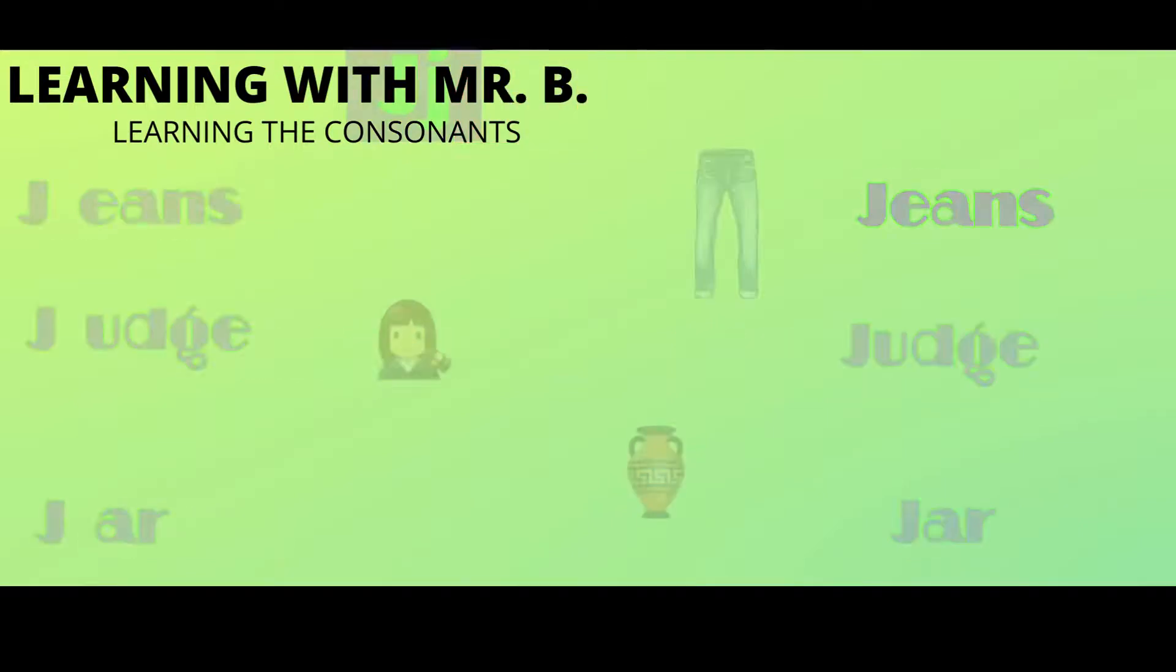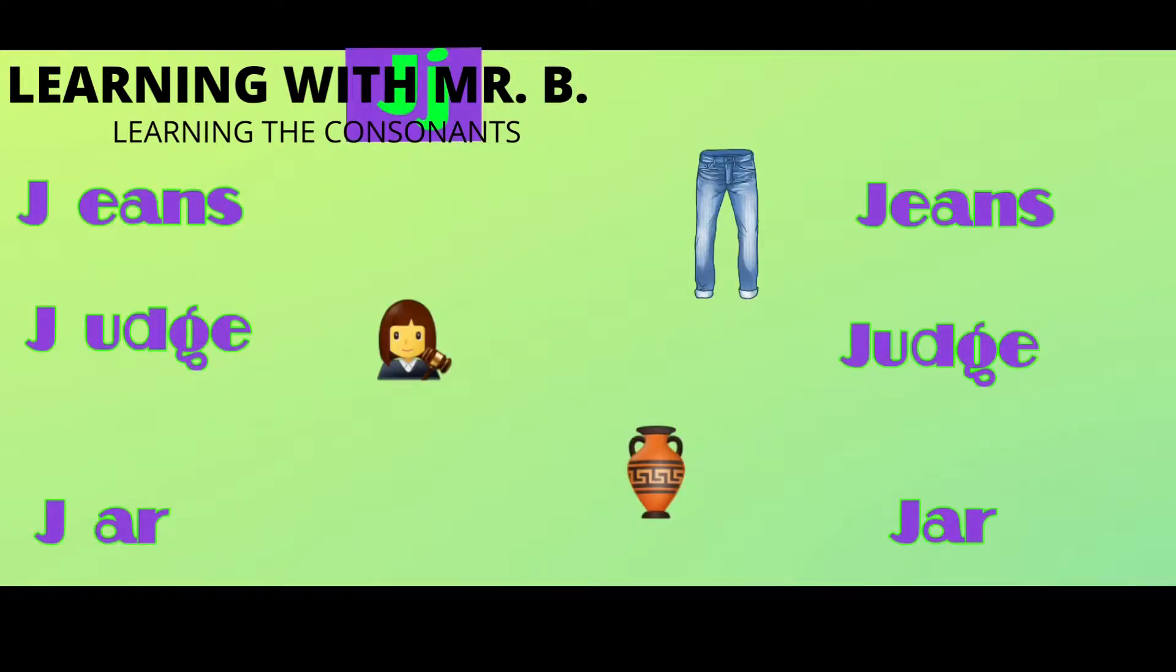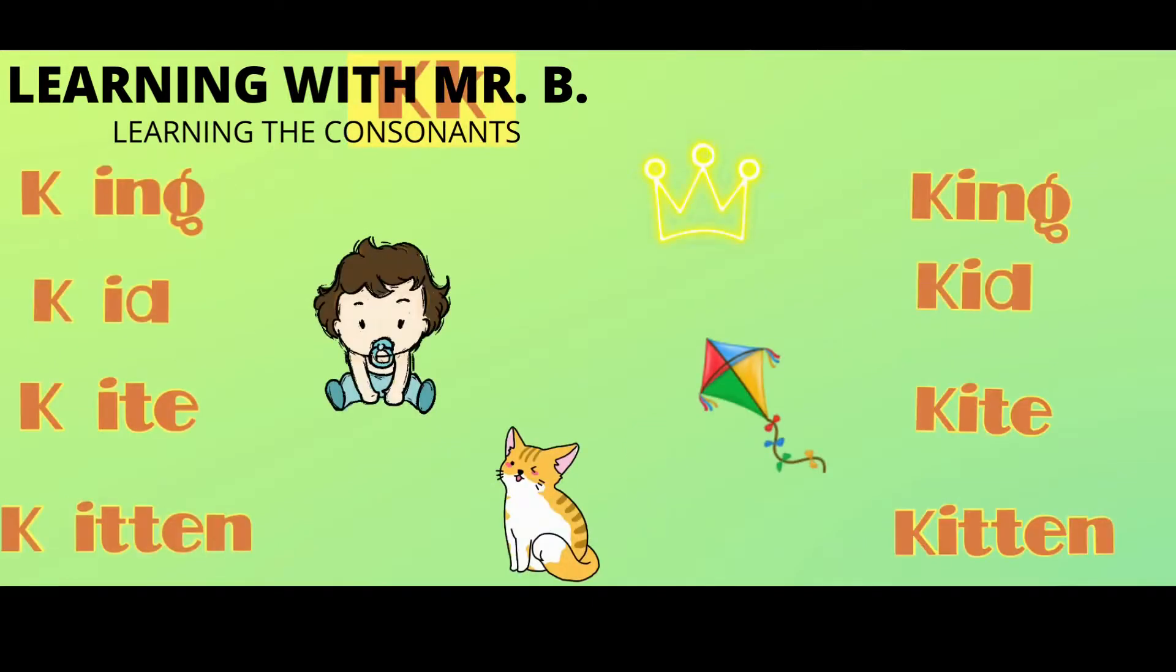Consonant J: jar, judge. And K: Kate, king, thick, keeper, tight, kitten. Now let's read tongue twisters, repeat after me.